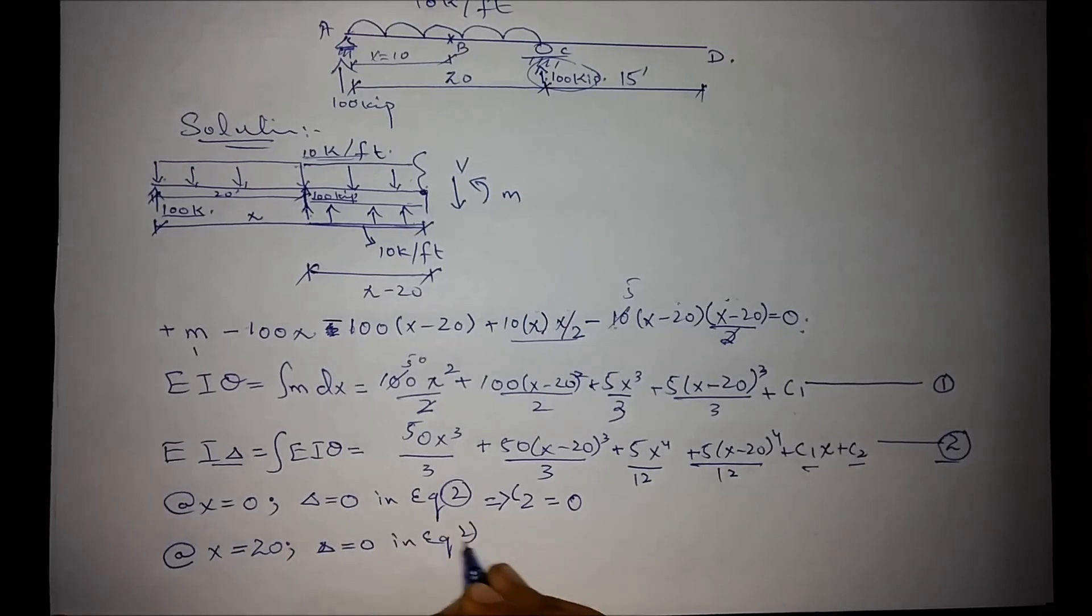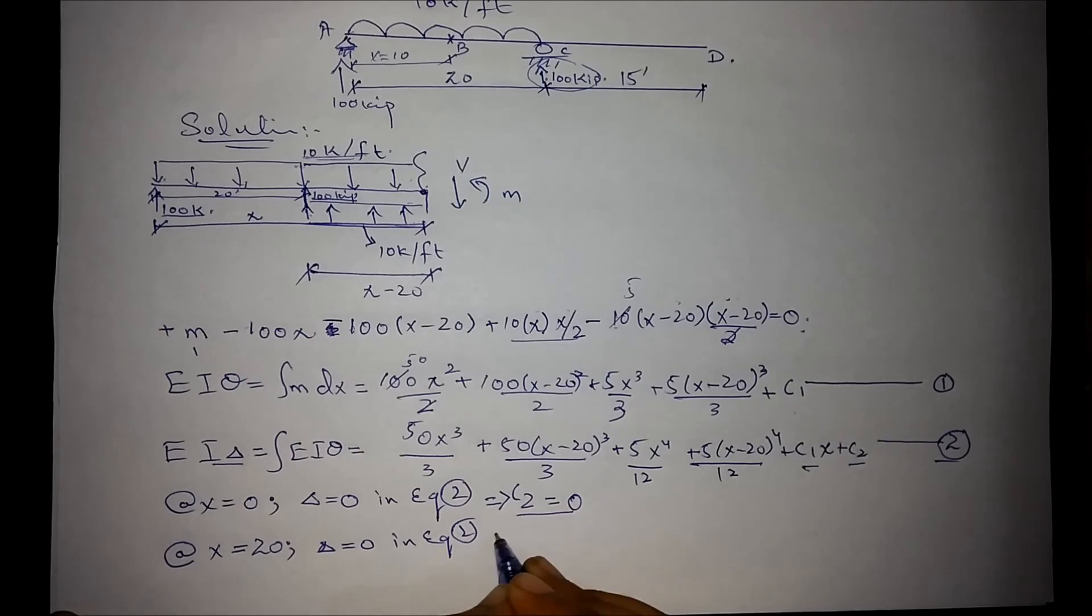From equation number 2 with c2 equal to 0, we get the value of c1 as minus 3,333.33.